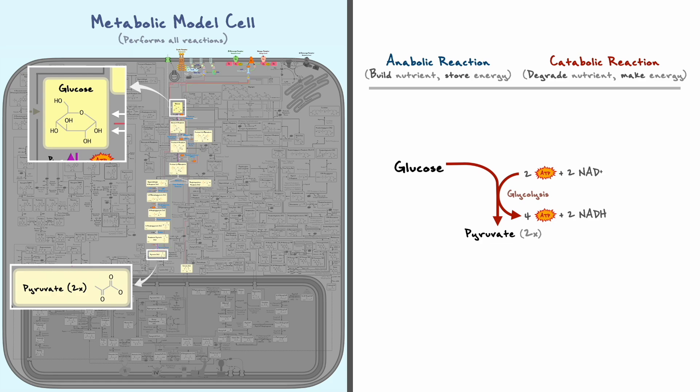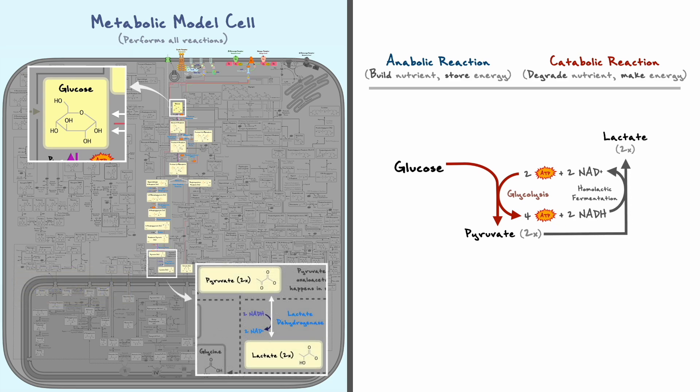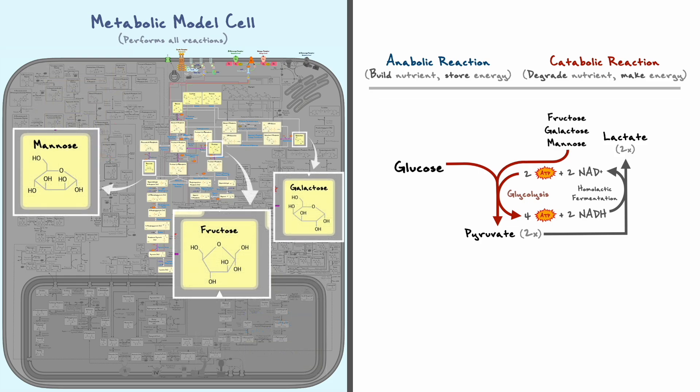Importantly with glycolysis, it requires a fresh supply of NAD+ to keep the pathway going, so to replenish this supply, we covered homolactic fermentation, which takes pyruvate and converts it to lactate to get back some NAD+. Besides glucose, other common six-carbon sugars such as fructose, galactose, and mannose were able to get integrated into glycolysis to make some energy.